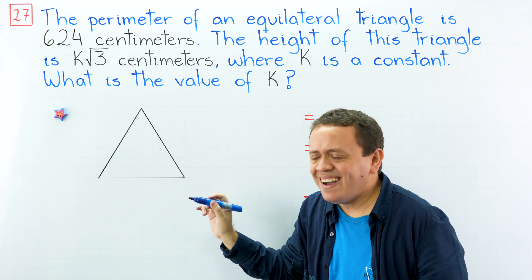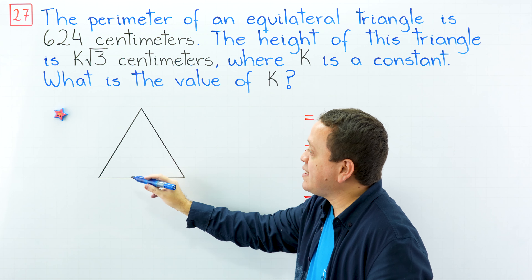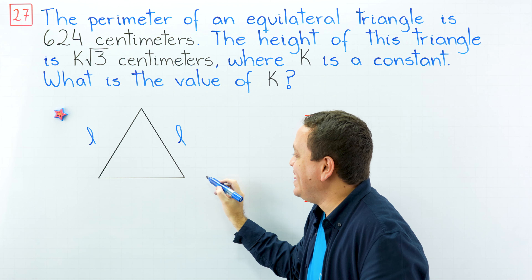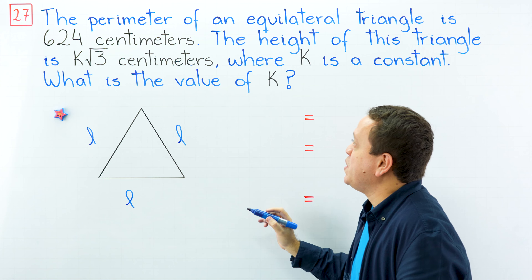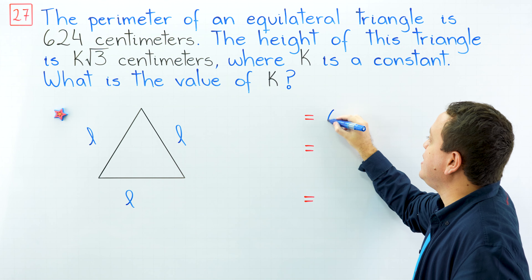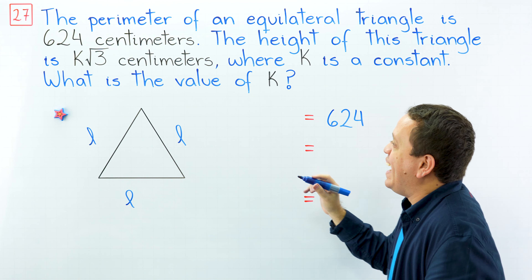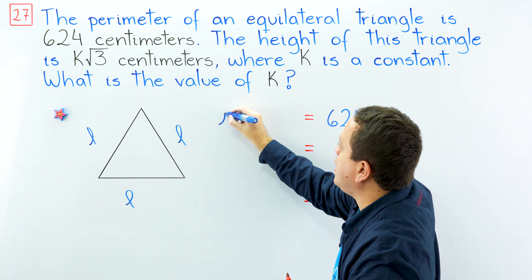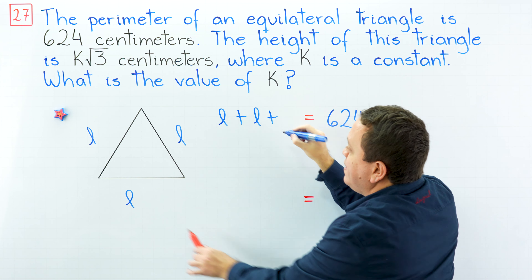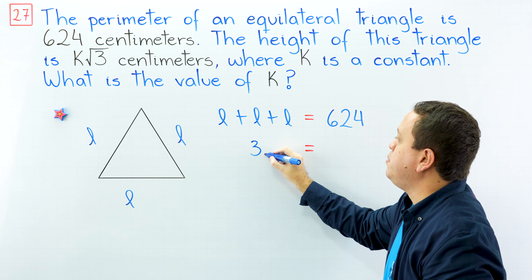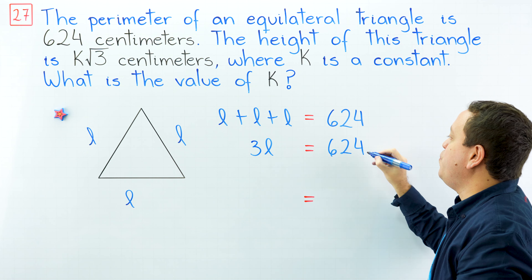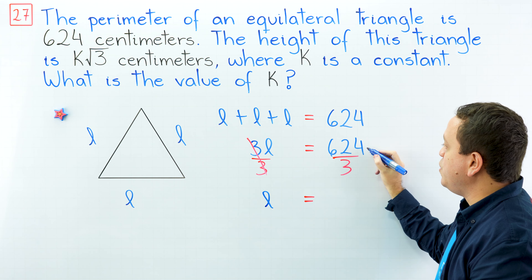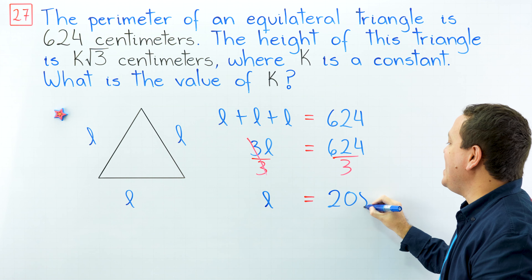Here I have already drawn my equilateral triangle. In an equilateral triangle, all three sides have the same length. Let's say that the length of each side is L, so all three sides are L. We know the perimeter is the sum of all sides: L plus L plus L equals 3L, and this is equal to 624. Dividing both sides by 3, L equals 624 divided by 3, which gives us 208 centimeters.